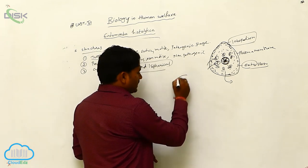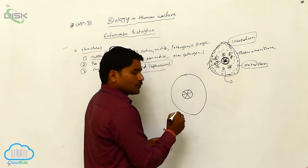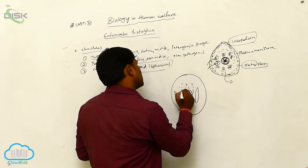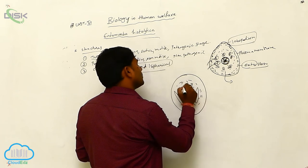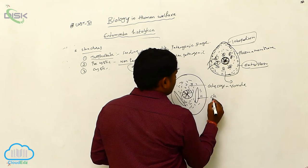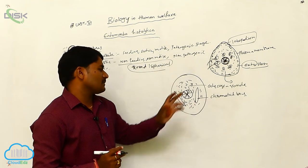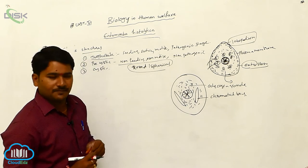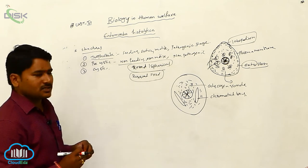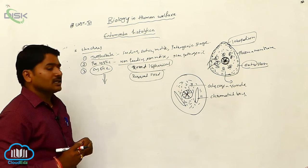The precystic stage is small, round, or spherical. Looking at this structure, some granules are present called glycogen granules, and chromatoid bars are also present. These two — glycogen granules and chromatoid bars — are the reserved food materials of the precystic stage.